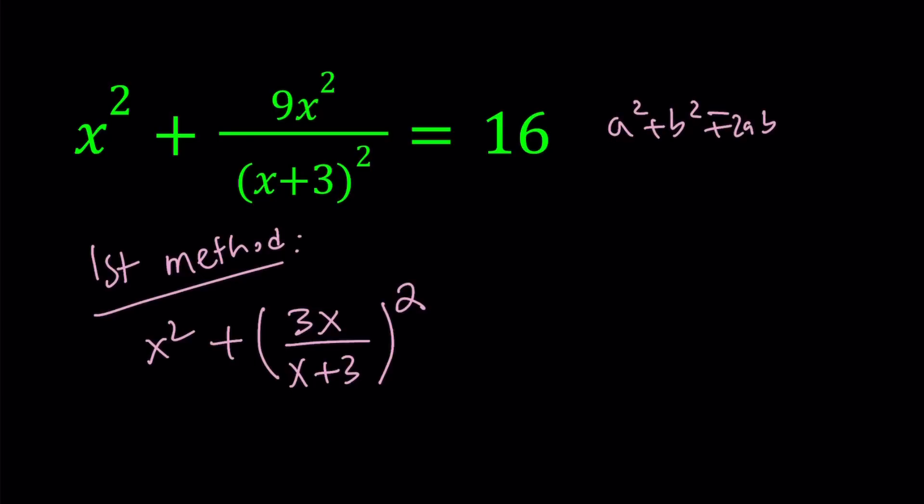In this case, I'm going to subtract. You're going to see why in a little bit. So if you go ahead and subtract 2ab from this, and of course you have to do it on both sides, right?